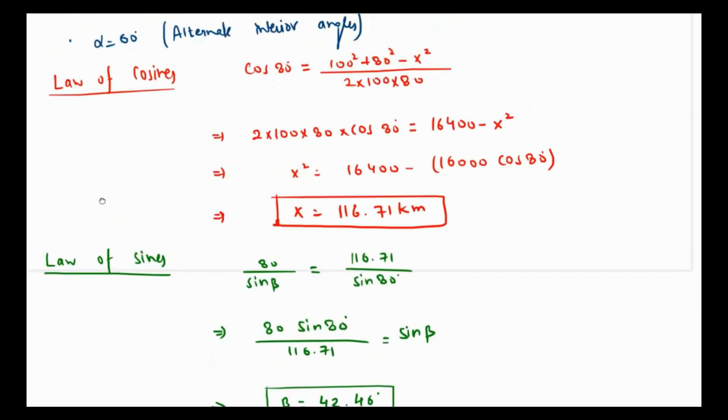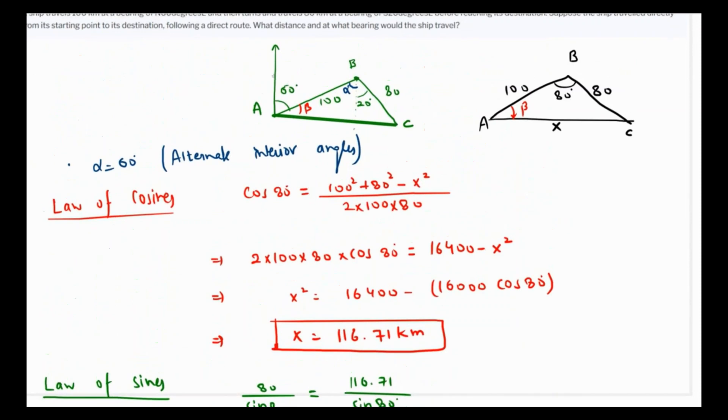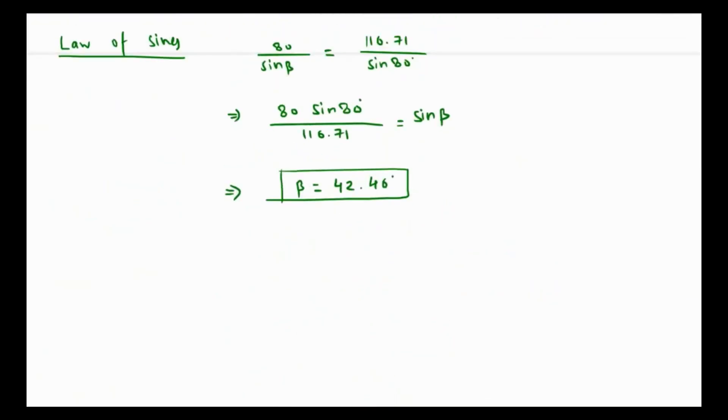We are not really interested in beta, but in the bearing. From the north, the total angle is going to be 60 plus beta, which is its bearing. The bearing is 60 plus beta, which is 102.46 degrees. This is east of north, so it is written as north 102.46 degrees east.